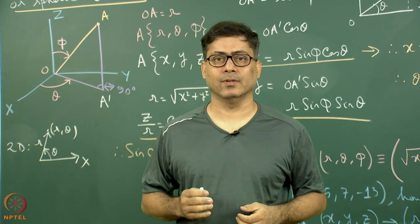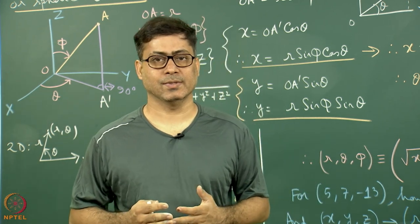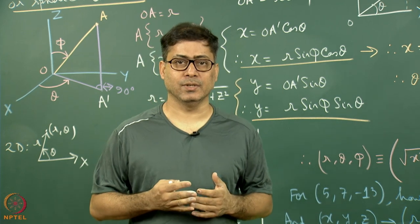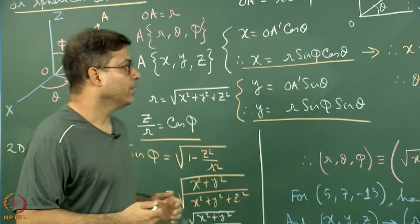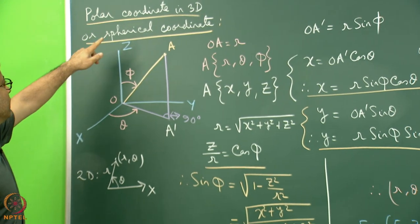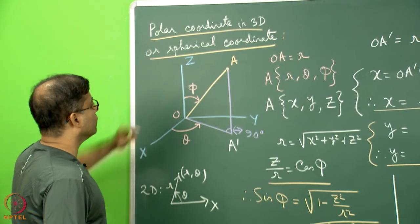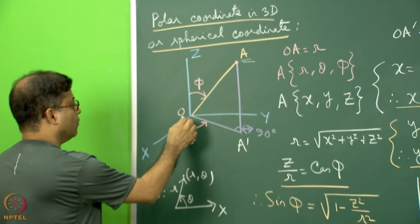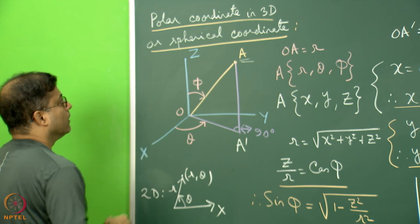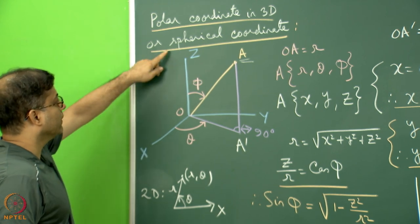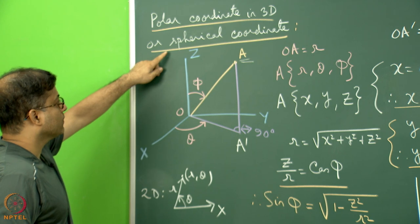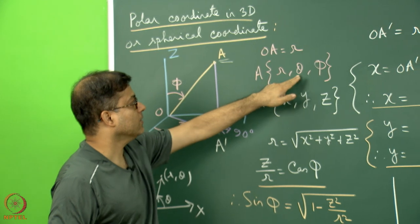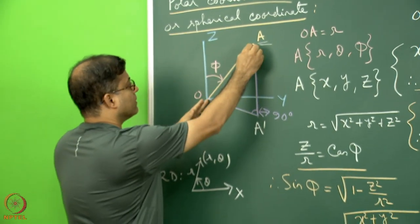The study of stress involves different coordinate systems: orthogonal in 2D and 3D, polar in 2D, and sometimes non-orthogonal systems. We now look at the polar coordinate in three dimensions, also called the spherical coordinate system. For a point A with origin O, its position in spherical coordinates is expressed by three numbers: R, theta, and phi, where R is the OA distance.